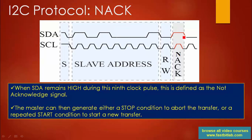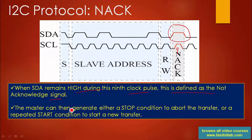This is how a NACK looks like: at the ninth clock cycle, if the SDA line is pulled high, that is NACK. When the SDA line remains high during the ninth clock pulse, this is defined as the not-acknowledge signal. The master can then generate either a stop condition to abort the transfer, or a repeated start condition to start a new transfer.